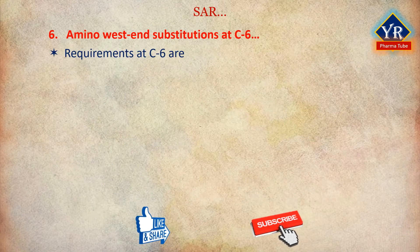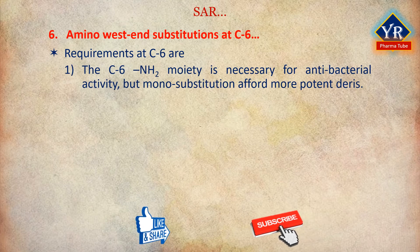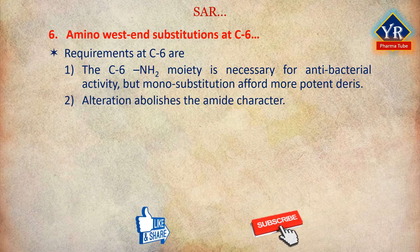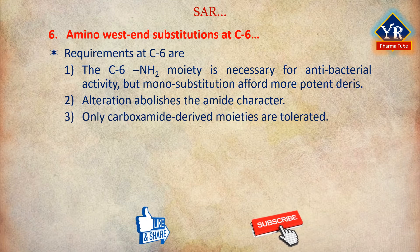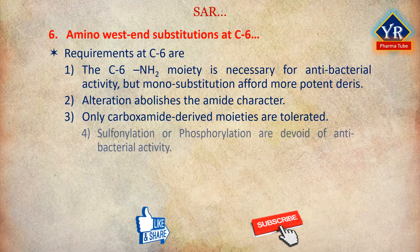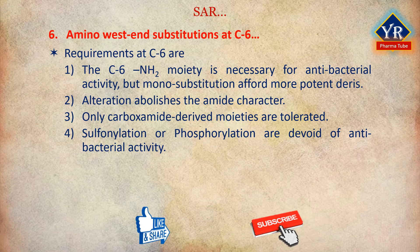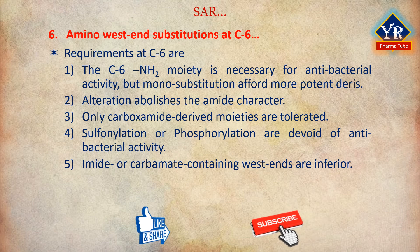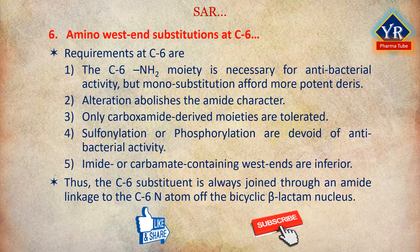Some simple requirements at C6 substitutions are: Number 1, the C6 amine moiety itself is necessary for appreciable antibacterial activity, but substitution of the amine via monoacylation can afford much more potent congeners. Number 2, alterations that abolish the amide character of the side-chain are detrimental. Number 3, only carboxamido-derived side-chain moieties are tolerated. Number 4, sulfonylation or phosphorylation of the C6 amine substituent — that is, sulfonamide or phosphoramide-containing side-chain substituents respectively — are devoid of useful antibacterial activity. Number 5, imide or carbamate-containing side-chains are inferior. Number 6, the penicillin side-chain substituent is nearly always joined through an amide linkage to the C6 nitrogen atom of the bicyclic beta-lactam nucleus.